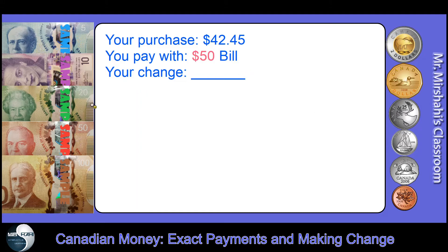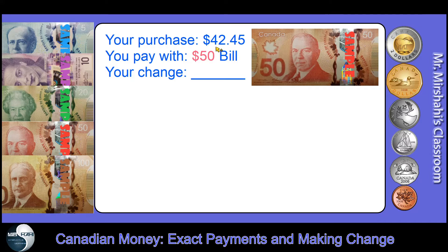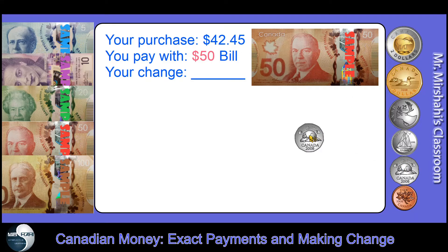The $50 bill is a pinkish color — here you are. Your purchase amount is $42.45 and you want to figure out what the change is, because if you pay more you should get the rest of your money back. We're going to use the counting-up method: $42.45 — we want to go up to the next 25, which is 50 cents. I need a nickel — a 5-cent coin — to get from 45 cents to 50 cents.